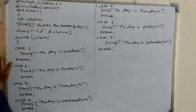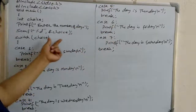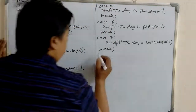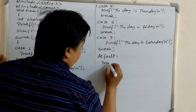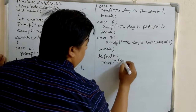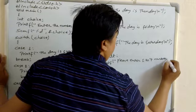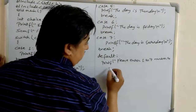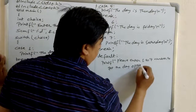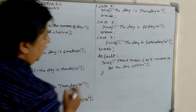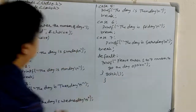There are 7 days in a week, so if no option matches the expression, it displays the default statement: printf 'Please enter 1 to 7 number to get the day option.' Then we close the switch, and close the main function.